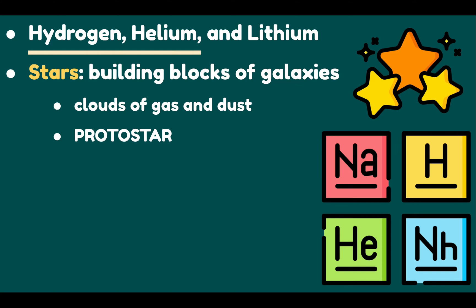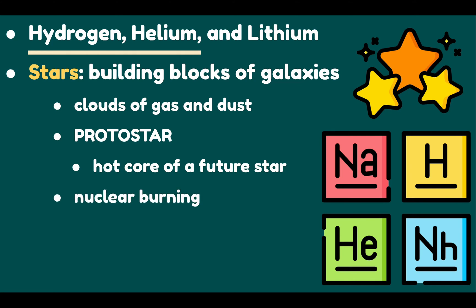A protostar is the hot core of a future star as thermonuclear reactions set in — an early stage in star formation resulting from the gravitational collapse of gases. A star's energy comes from combining light elements into heavier elements by fusion, also called nuclear burning or nucleosynthesis. Stellar interiors are like furnaces where elements are synthesized, combined, or fused together.